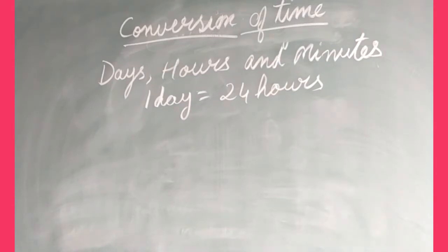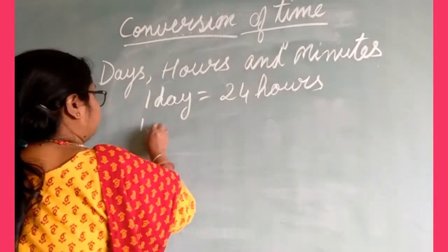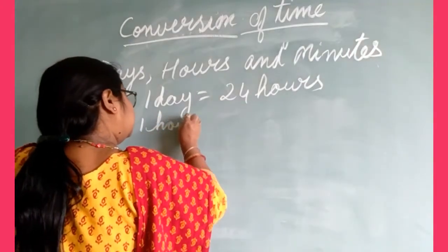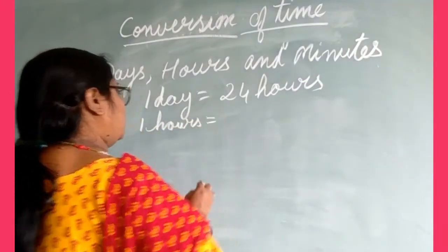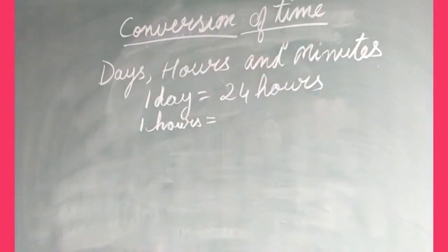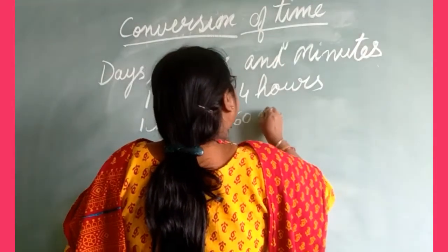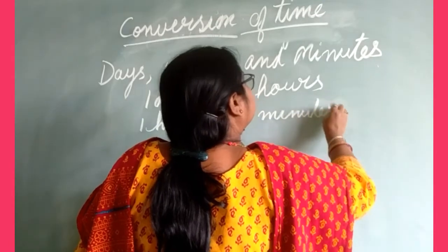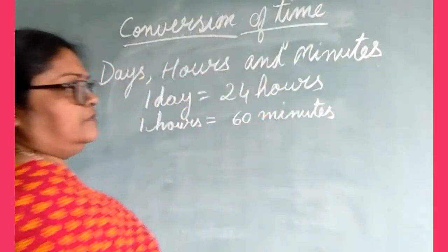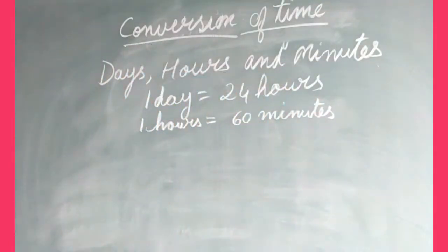And one hour is equal to how many minutes? One hour is equal to 60 minutes. So, all of you know that one day equals 24 hours, and one hour equals 60 minutes.